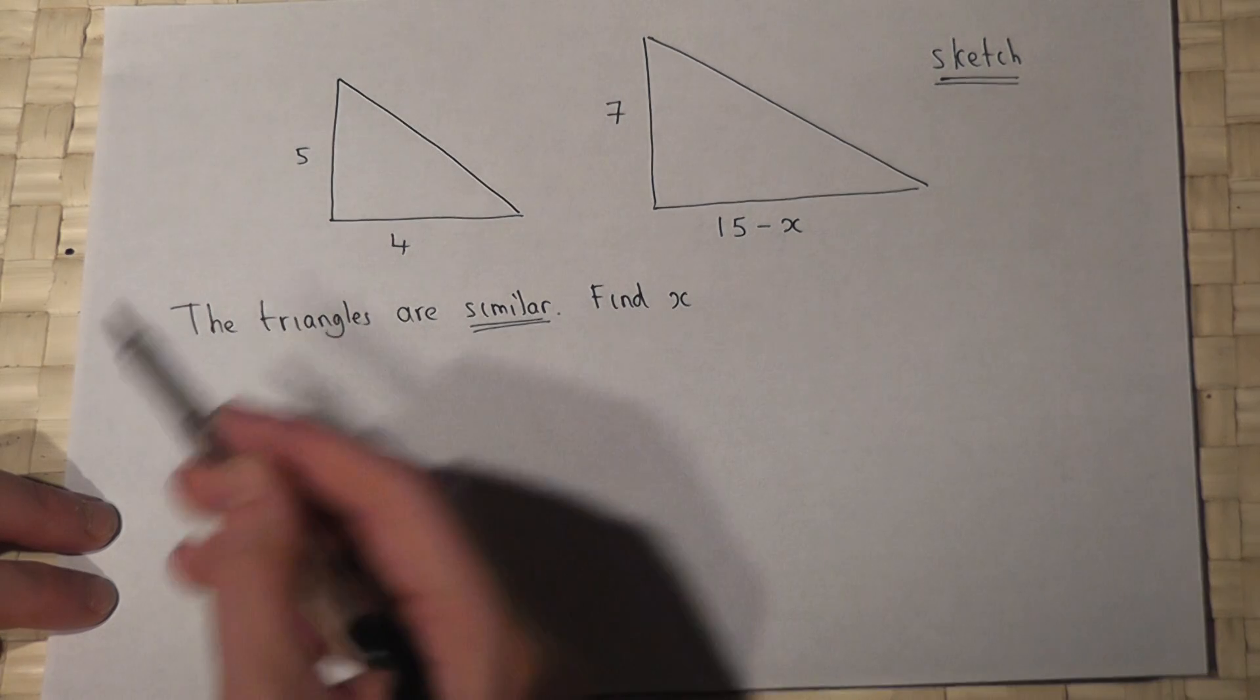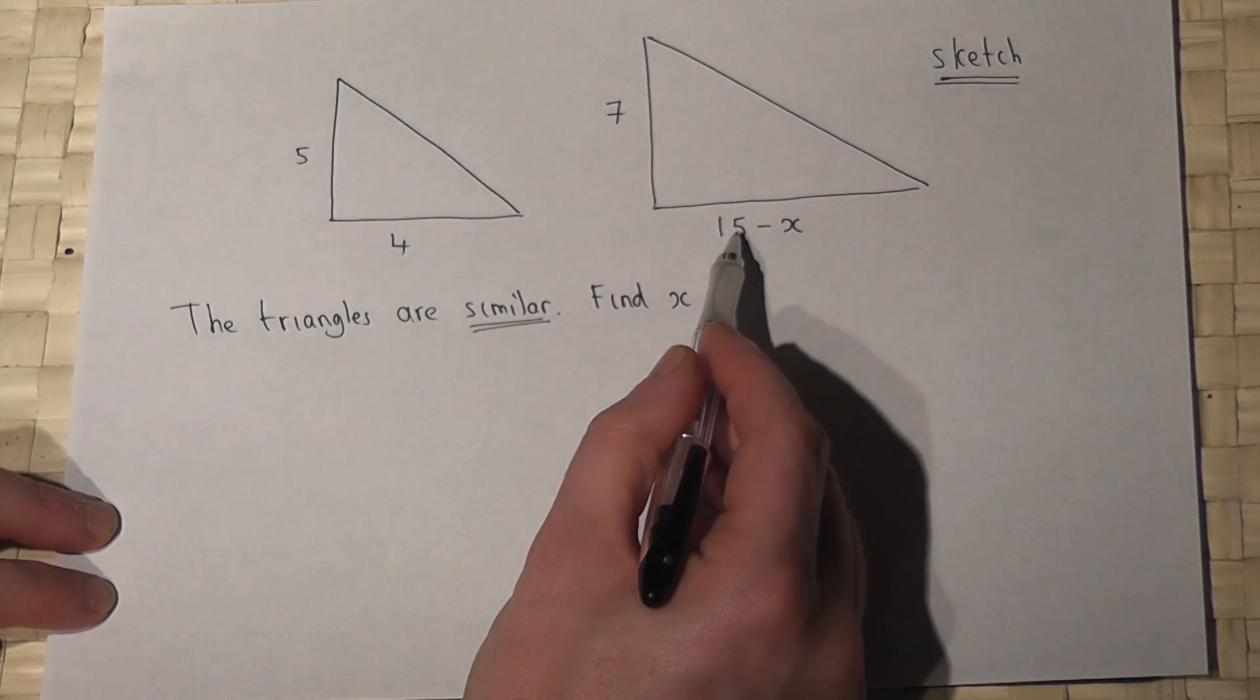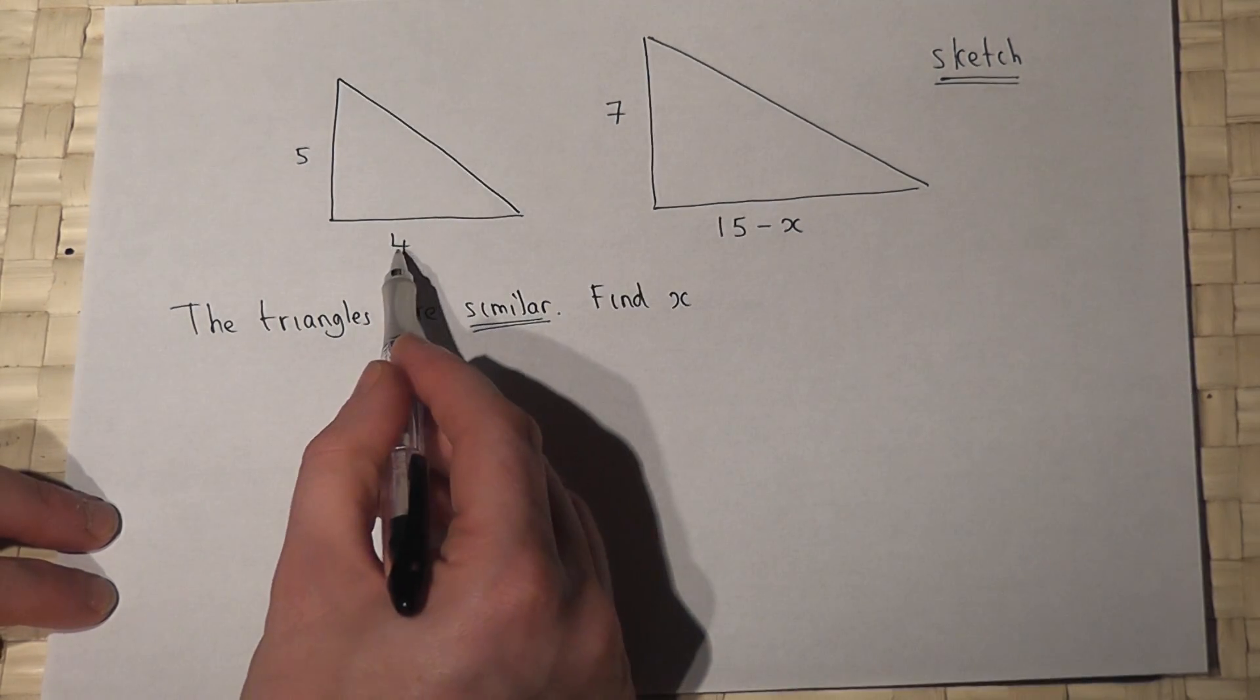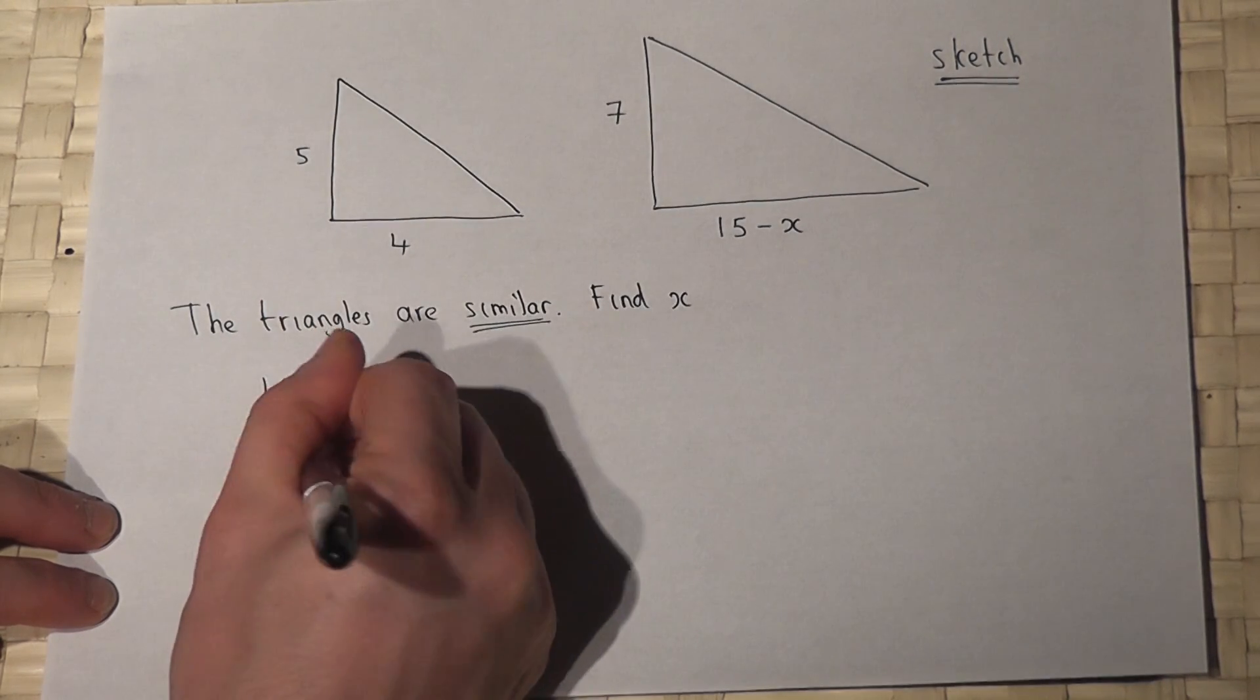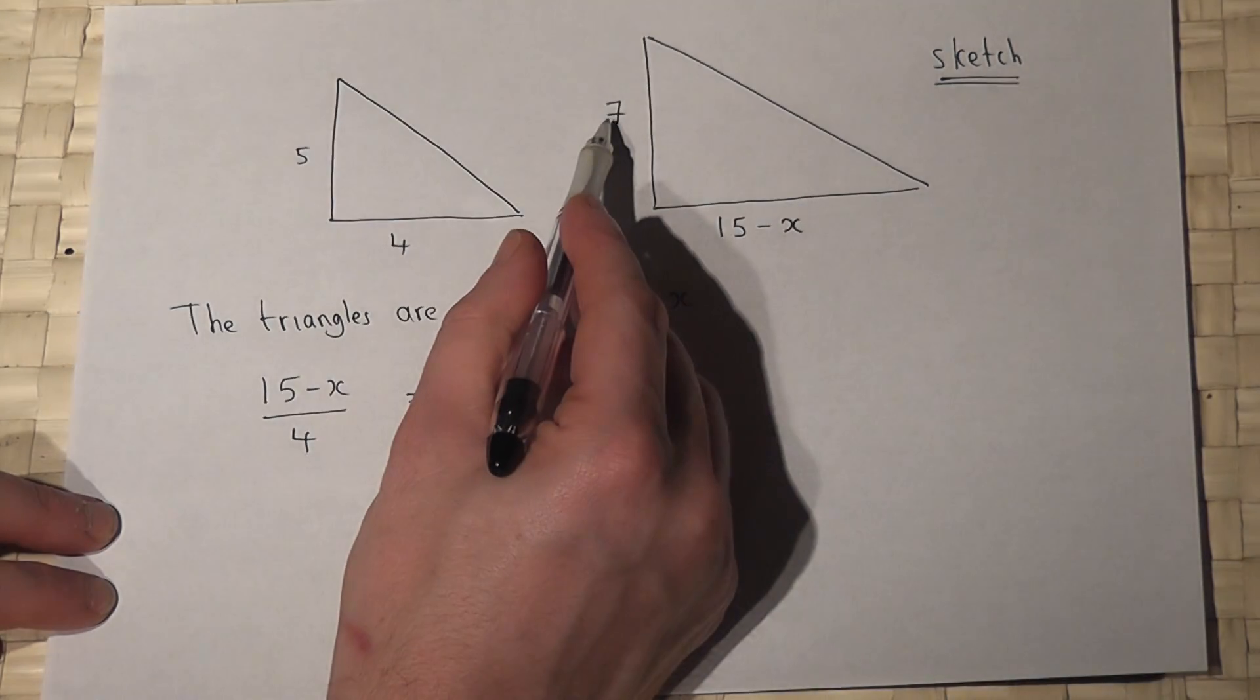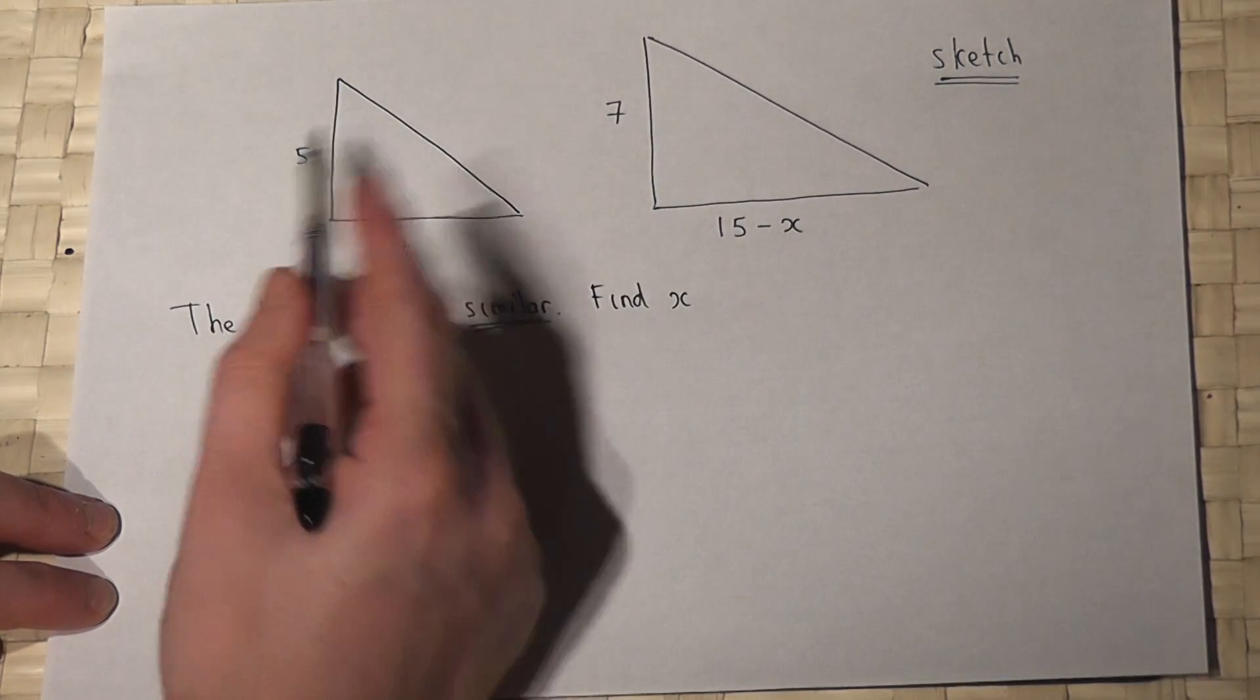By which I mean that if I do that side divided by that side, so 15 minus x over 4, that would be the same as this side divided by that side.